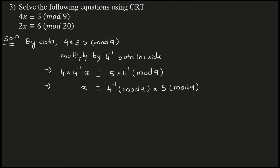How do you find 4-inverse? From the previous examples, we know the property: a times a-inverse is congruent to 1 mod m. So 4 times 4-inverse is congruent to 1 mod 9 — our modulus is 9. We will find the 4-inverse value using the inspection method. You multiply 4 by a candidate, divide by 9, and check if the remainder is 1.